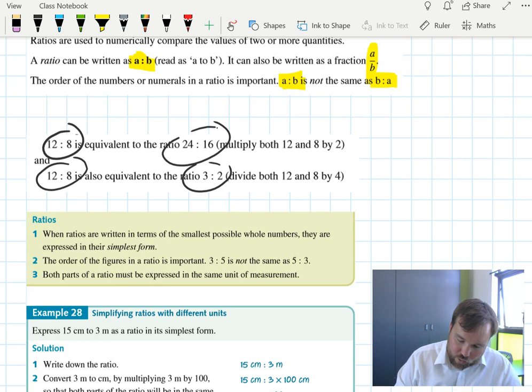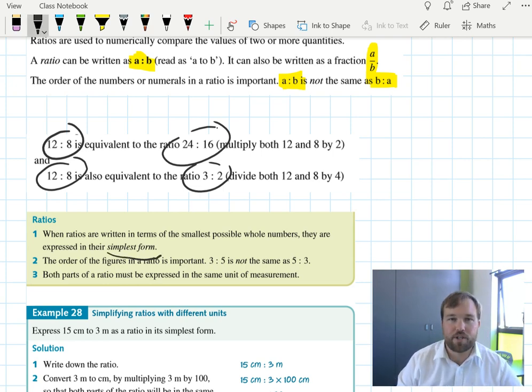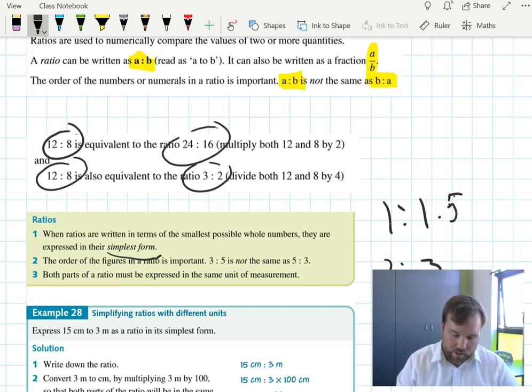When ratios are written in terms of the smallest possible whole numbers, they are expressed in their simplest form. So we are often using ratios of whole numbers. 1 to 1.5 we would not consider a simplest ratio. We would instead multiply both sides by 2 to make it a 2 to 3 ratio. Ratios must be expressed in the same unit of measurement.